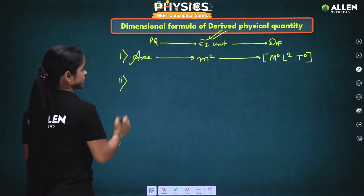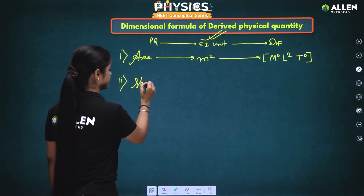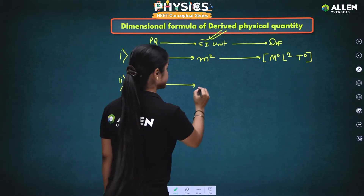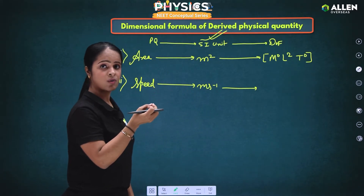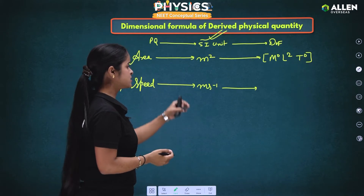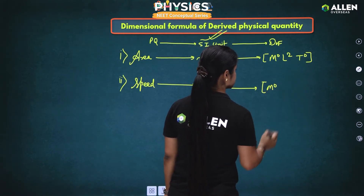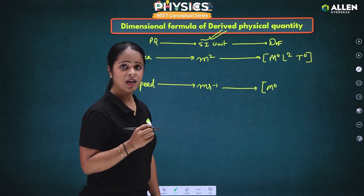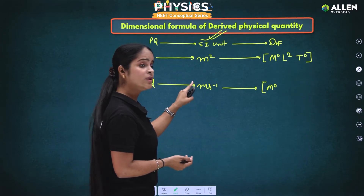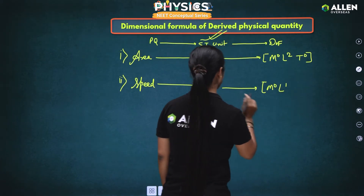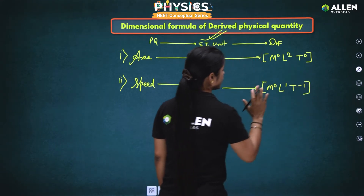The second example is speed, which is also a derived physical quantity. The SI unit of speed is meter per second. There is no mass term, so we write M to the power 0. Meter to the power 1 gives us L to the power 1. And second to the power minus 1 gives us T to the power minus 1. So the dimensional formula of speed is M⁰L¹T⁻¹.